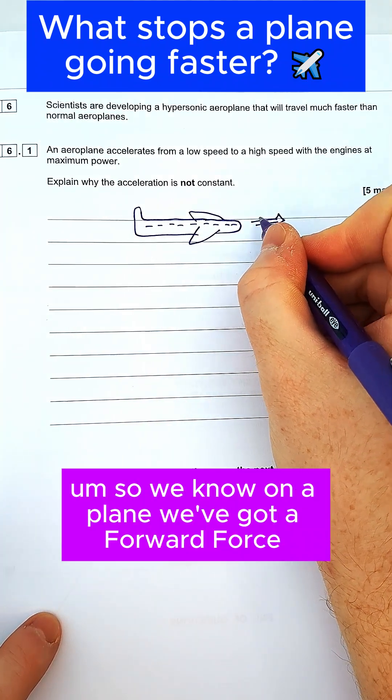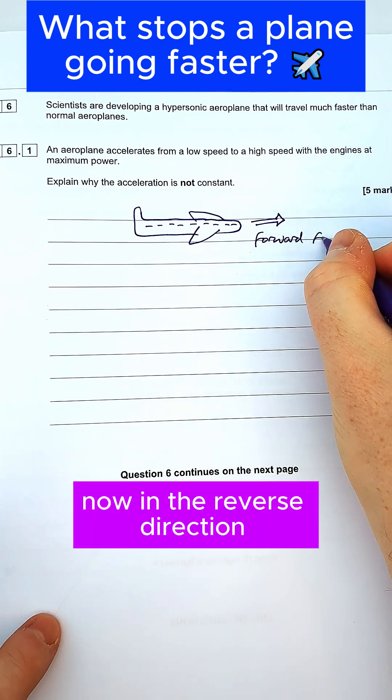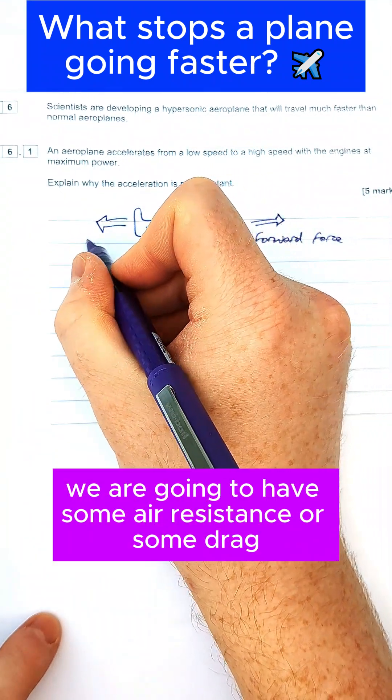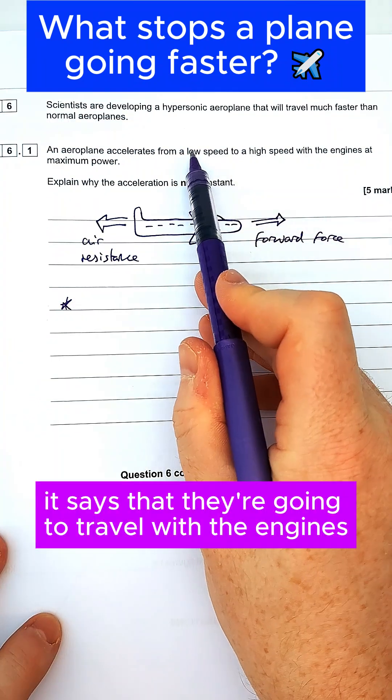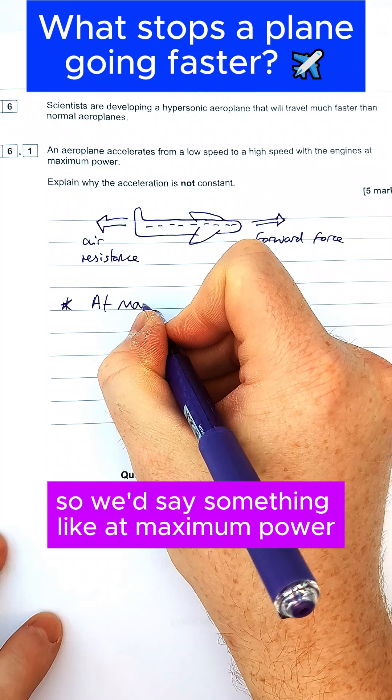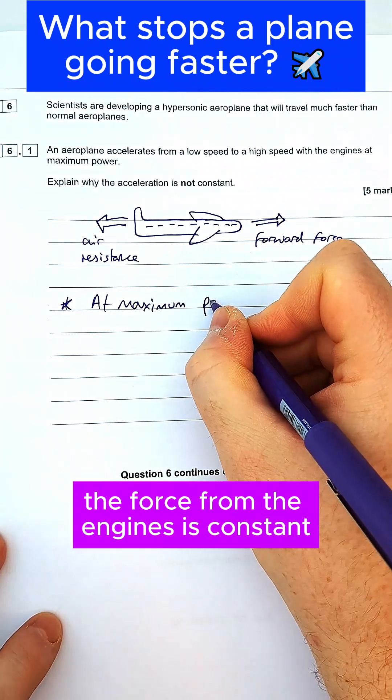We know on a plane we've got a forward force, and in the reverse direction we are going to have some air resistance or some drag. The idea is that initially it says they're going to travel with the engines at maximum power, so at maximum power, the force from the engines is constant or the forward force is constant.